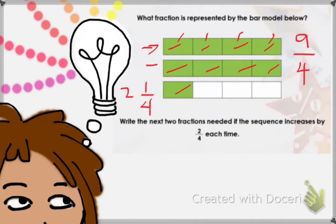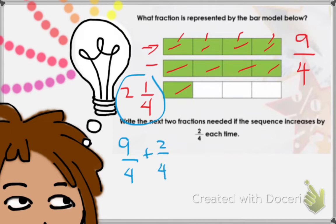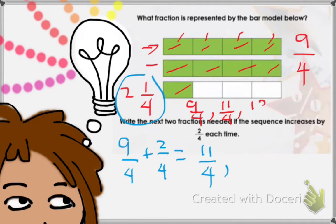Now it says: write the next 2 fractions needed if the sequence increases by 2 quarters each time. I have 9 quarters, and each time it increases by 2 quarters. So I add 2 over 4: 9 plus 2 equals 11 over 4. And next, 11 over 4 add 2 fourths equals 13 over 4.